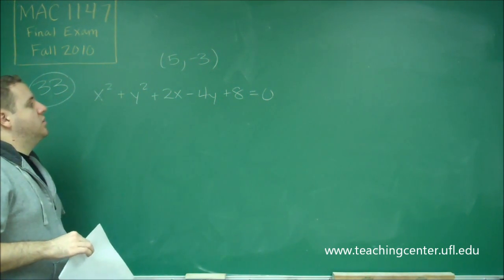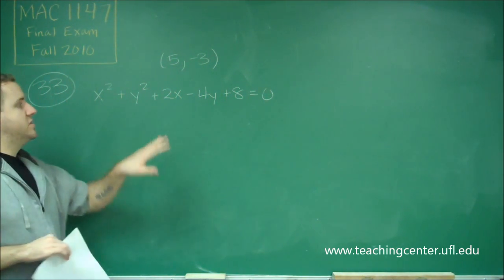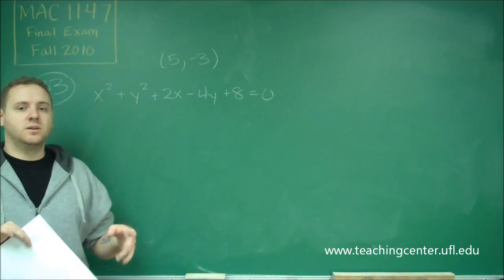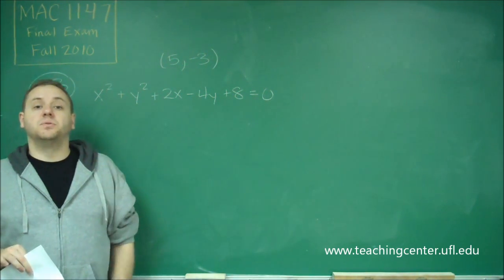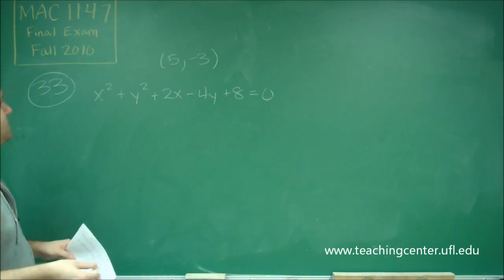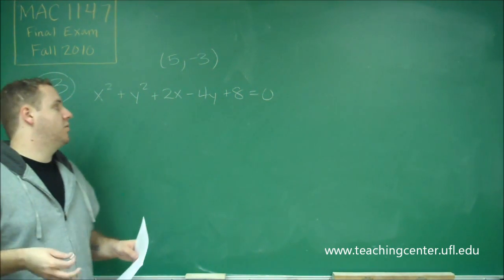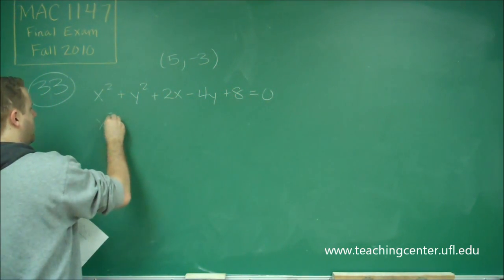So one thing you can notice, I can save you some time here, is that since all we're interested in about the circle is the center, we don't really have to worry about what happens to the radius, so we can skip those steps in our algebra. So remember to find the center of a circle when it's written like this, we need to do completing the square.